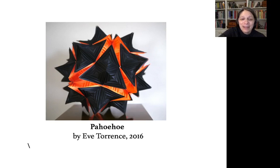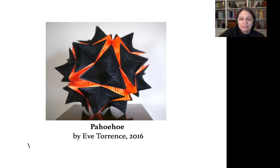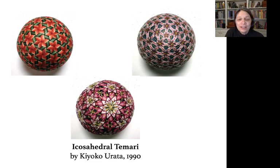This is my work. It's based on the polyhedron called the rhombic triacontahedron, which is made from 60 rhombi. It is meant to portray the type of lava that forms a ropey surface when it cools. These are gorgeous examples of the traditional art of tamari by Kyoko Yurata. Tamari balls are created using a framework based on the symmetry of regular polyhedra. The artist creates a grid based on a polyhedron and then sews the pattern using embroidery thread.